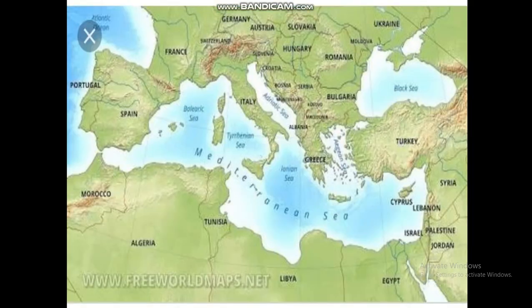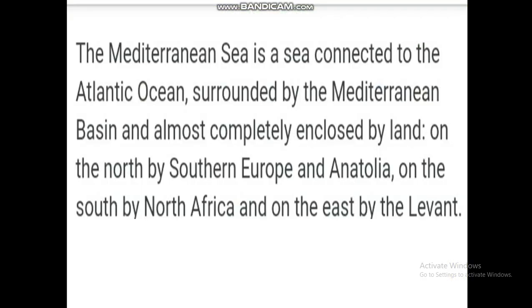Now here is the map of the Mediterranean Sea. It is a large sea that separates Europe from Africa. It stretches from the Atlantic Ocean in the west to Asia in the east. Many early civilizations developed in the Mediterranean region. It was a highly important route for merchants and travelers of ancient times, allowing for trade and cultural exchange between the emerging peoples of the region.